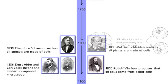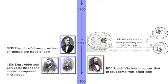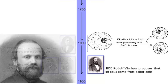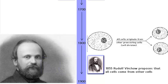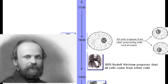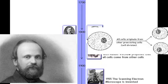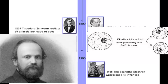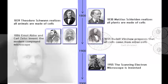The next part of the cell theory is that cells come from pre-existing cells. Virchow takes the work of another man, Robert Remack, and is credited with this part of the cell theory. Why? Remack was Jewish and while unjust, he was prevented from being a part of the scientific community.